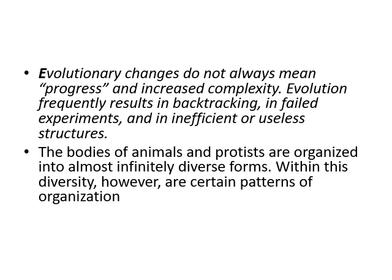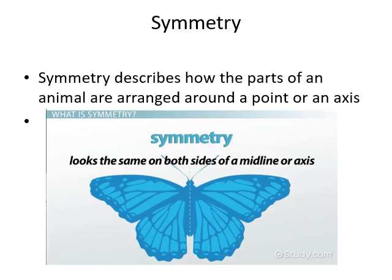The bodies of animals and protists are organized into almost infinitely diverse forms. Within this diversity, how are certain patterns of organization recognized? Symmetry describes how the parts of an animal are arranged around a point or an axis. For example, a butterfly has two wings equally attached to the body.